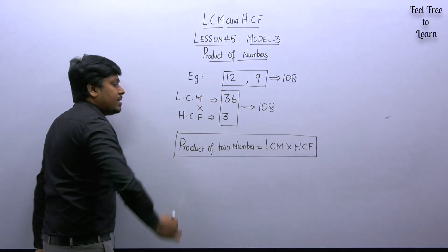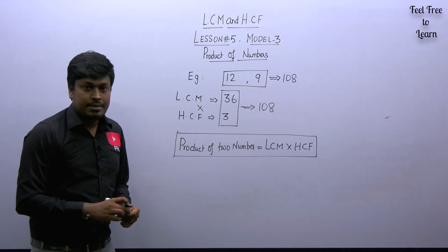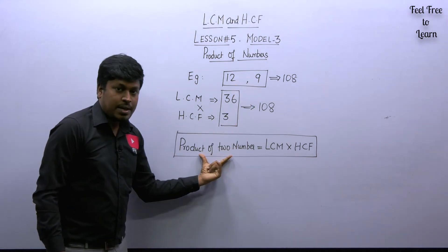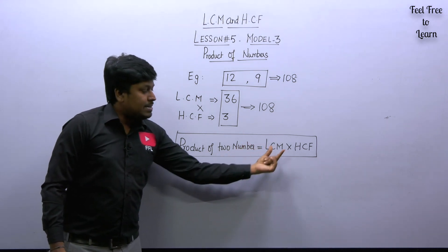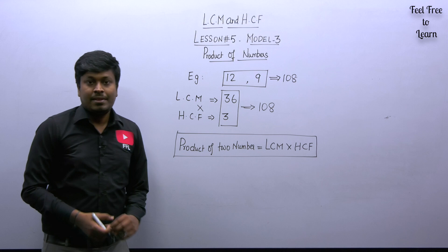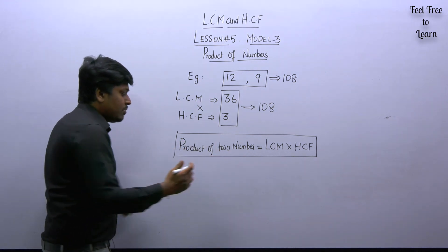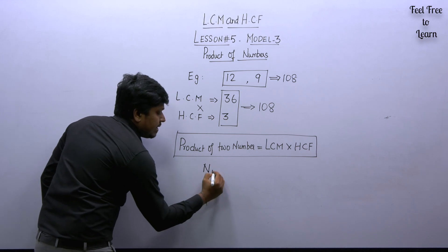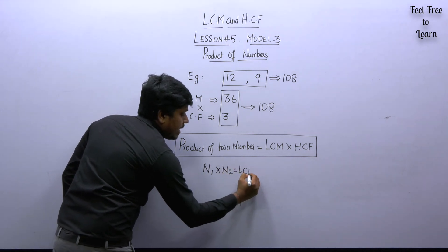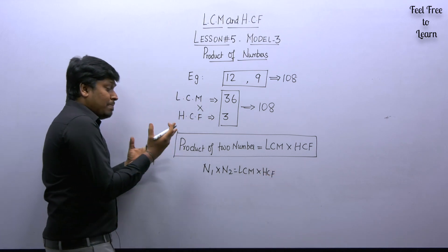This is one of the most important properties in LCM and HCF. Product of two numbers — here 108 — equals LCM × HCF, which also gives 108. Some books write it as: N1 × N2 = LCM × HCF. You may see this formula written in different ways across textbooks.